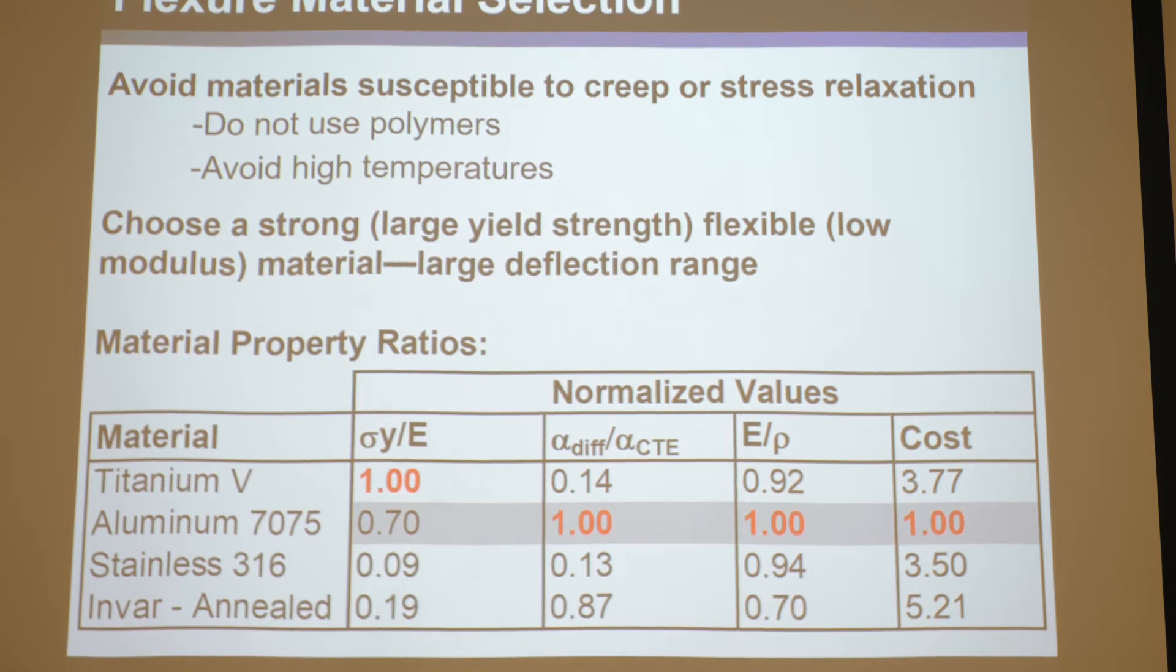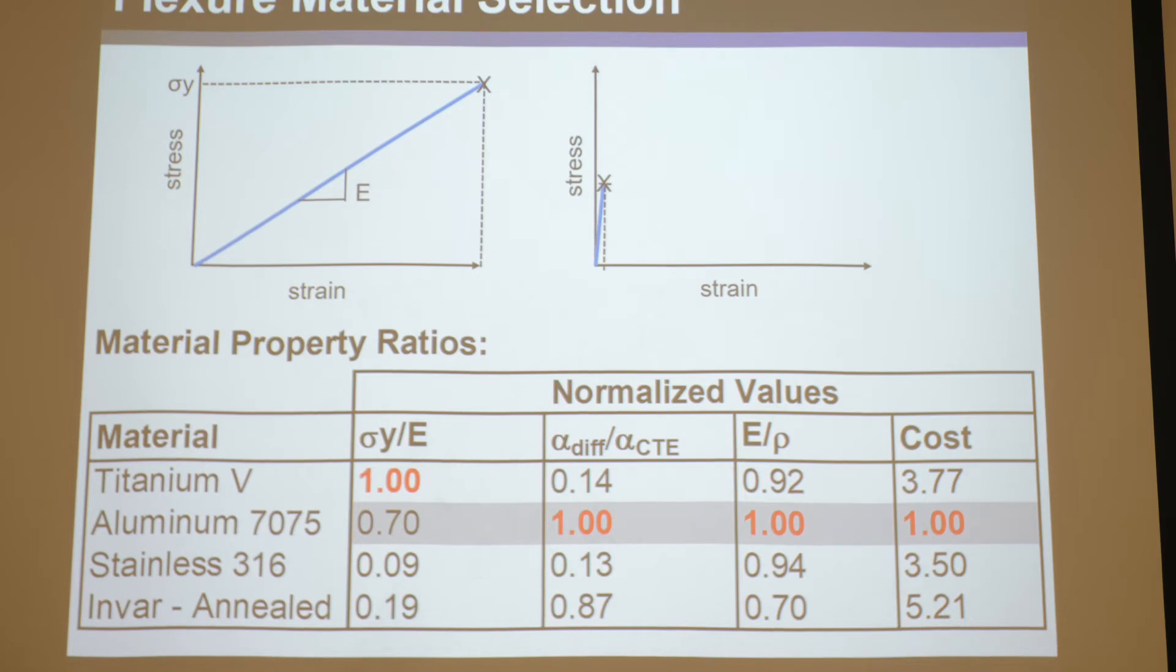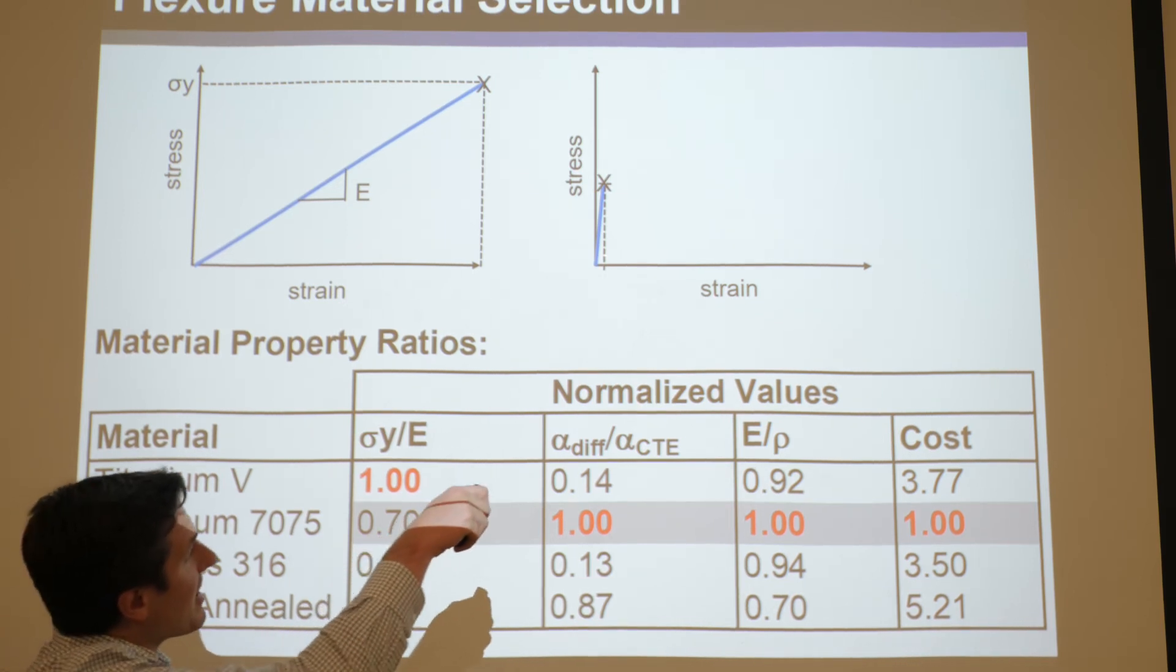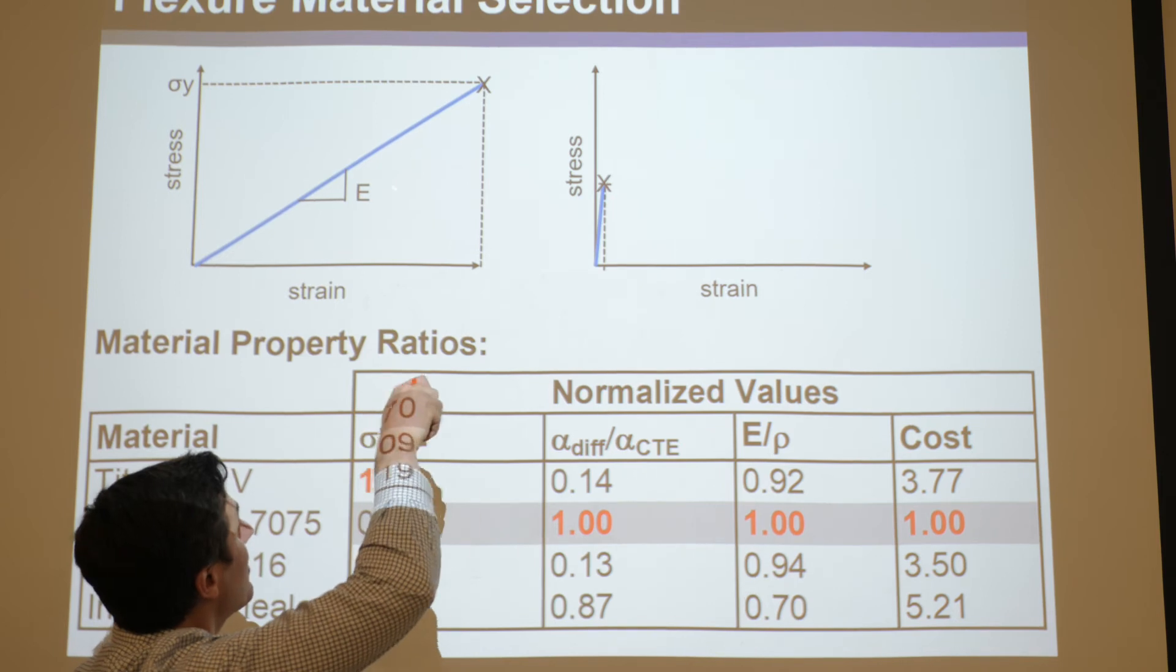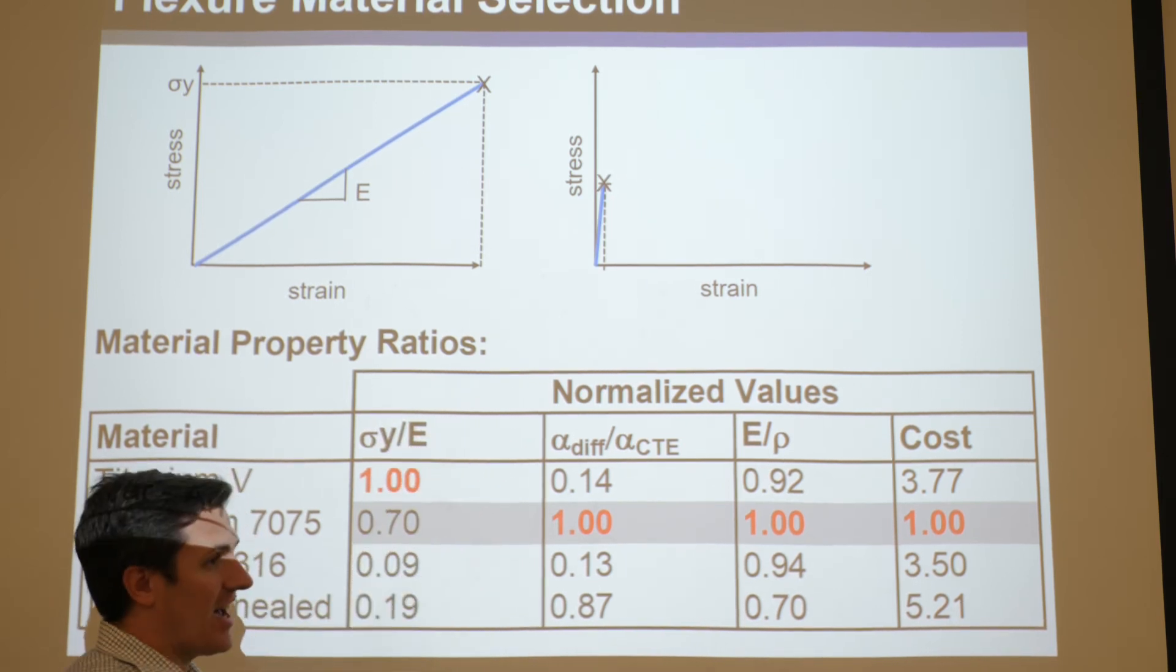This says choose a large yield strength, low modulus material to get a large deflection range. So look at these plots to help you understand why that's the case. Say I had a material that had a high yield strength, meaning it takes a lot of stress before it starts plastically deforming and yielding and moving toward failure, so everything before that, every stress before that below that, is elastic. So it has a high yield strength but a low modulus, it means the slope of this, if you're plotting stress versus strain, the slope of this is small, so it's a shallow line. So that's the case where you have a large yield strength, low modulus. Here is a case where you have a high modulus, meaning it's very steep, very large slope, but a small yield strength, doesn't go up very high.